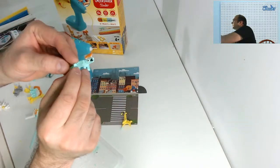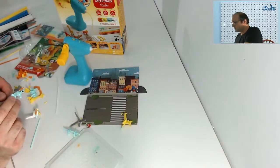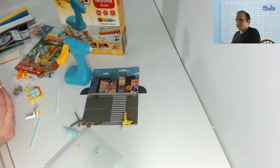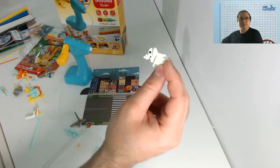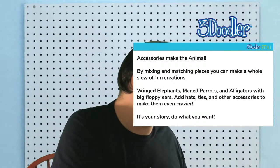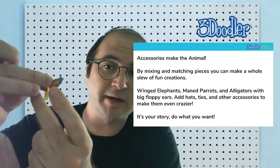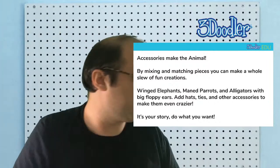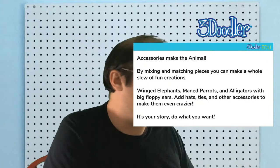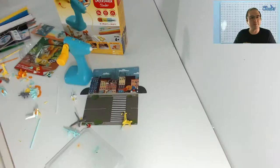You can always mix and match pieces as well. For example, there's no reason that I can't put wings onto a giraffe, make a winged giraffe. There's also a taxicab mold that we have in there, which I'll show you now, which is one of the accessories.